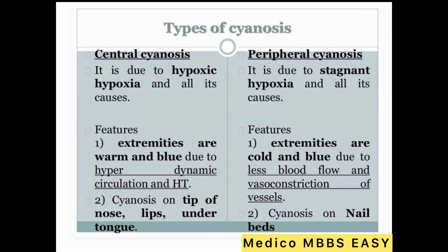There are two types of cyanosis: central cyanosis and peripheral cyanosis. Central cyanosis is due to hypoxic hypoxia and all its causes. Peripheral cyanosis is due to stagnant hypoxia and all its causes. In central cyanosis, extremities are warm and blue due to hyperdynamic circulation, affecting the tip of the nose, lips, and tongue. In peripheral cyanosis, extremities are cold and blue due to less blood flow and vasoconstriction of vessels.